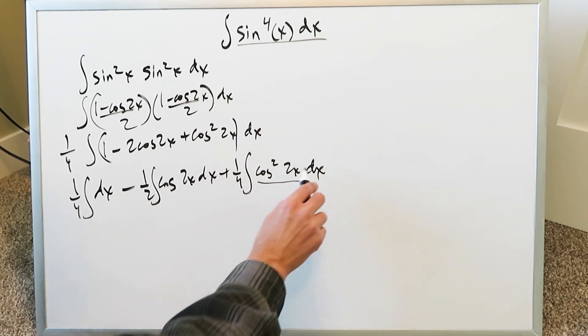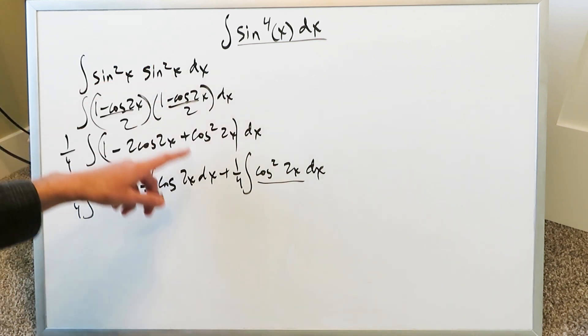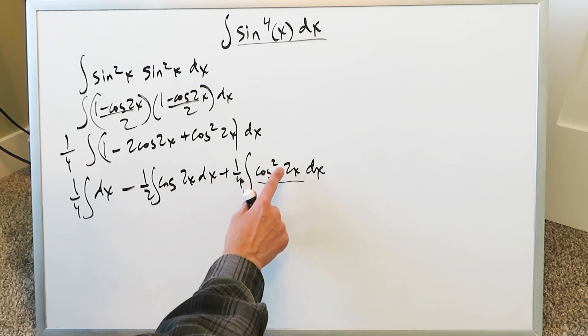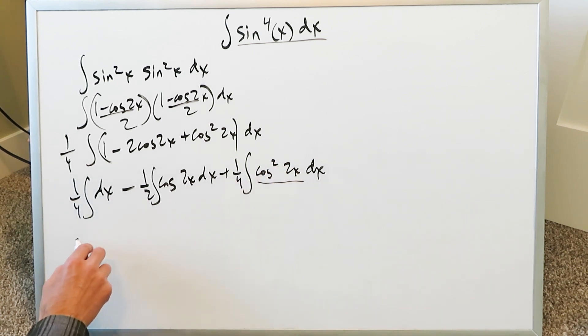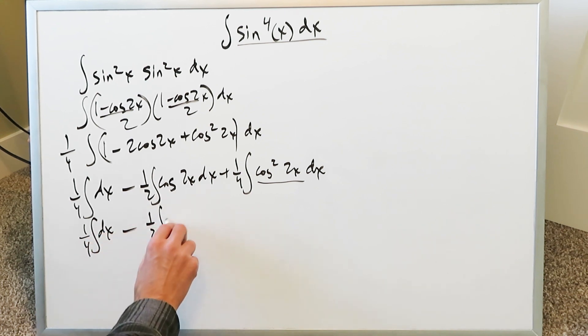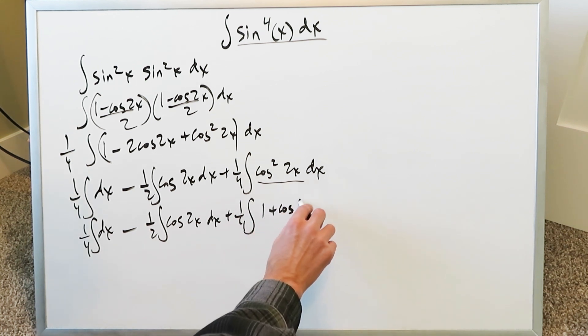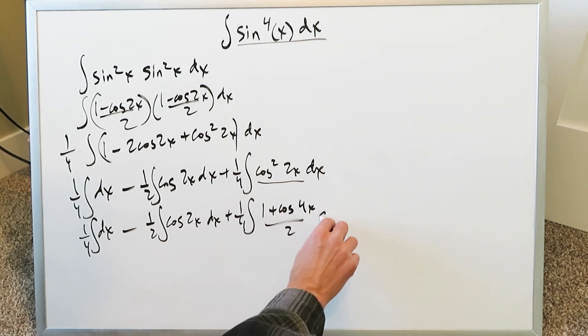This right here needs to be dealt with. These are sine square x's and here we have a cosine square 2x. It'll still use a power reducing identity but we'll have a slightly modified result. We here have a 1 over 4 integral dx minus 1 over 2 integral cosine 2x dx plus 1 over 4. We'll open this up. You'll have here a 1 plus cosine 4x over 2 dx.